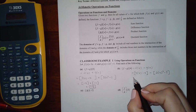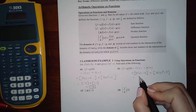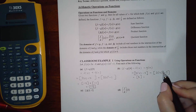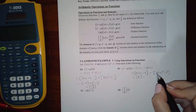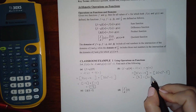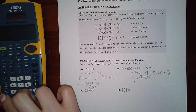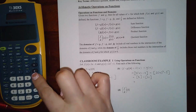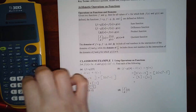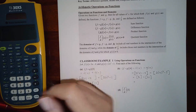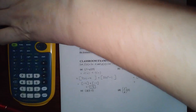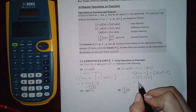Here I get 12 minus 4 which is 8, and for g I get 31. So 8 minus 31 — let me check the calculator — is negative 23.